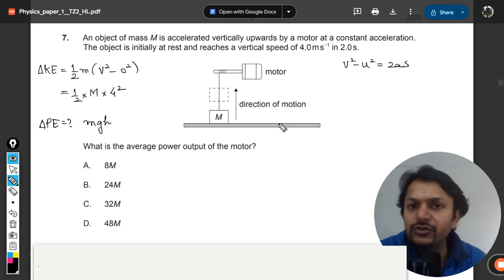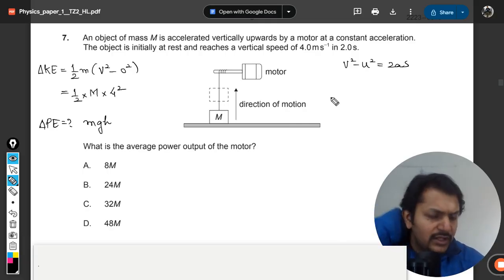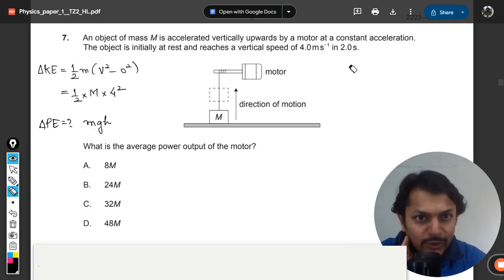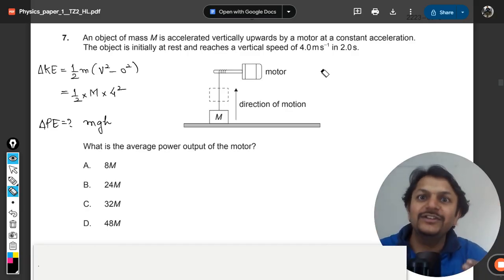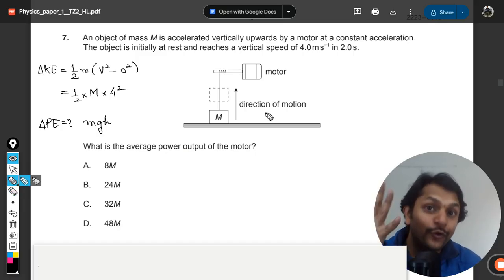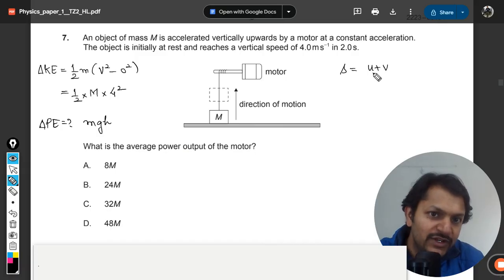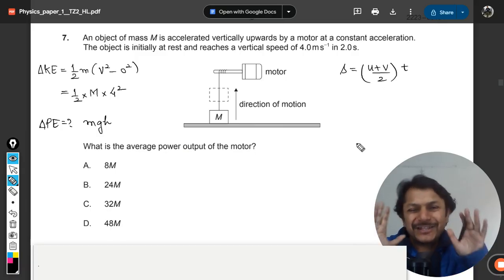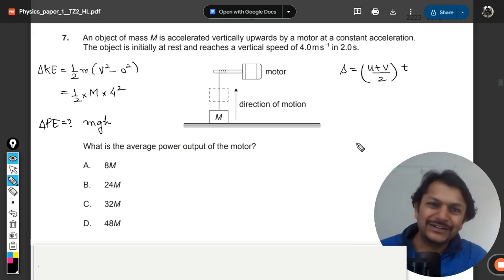For applying kinematic equations, we need sign conventions. Let's say upward is positive, downward is negative. But we should not use this because we don't know the acceleration and gravity is also there. We have another formula, the fourth kinematic equation: s = (u + v)/2 × t. This is the best formula to use here instead of finding acceleration.